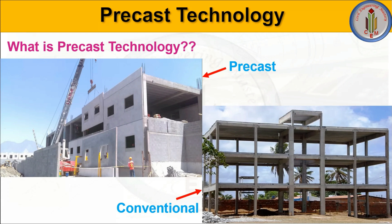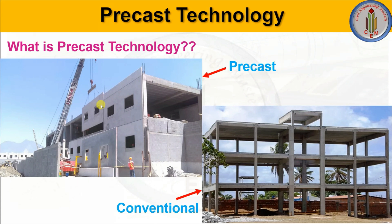First, let's discuss what precast technology is. In the conventional method of construction, we construct columns, beams, slabs, and wall panels everything on site. Whereas in the precast system, all structural elements like columns, beams, slabs, and wall panels are cast in the manufacturing unit — that is what the name 'precast' means. All elements are cast in the manufacturing unit according to the requirement and specification, then transported to the site and assembled there.